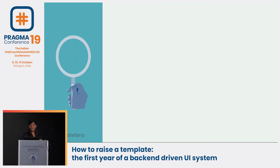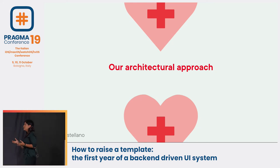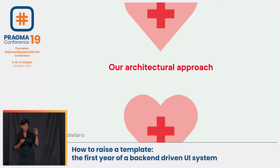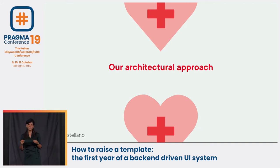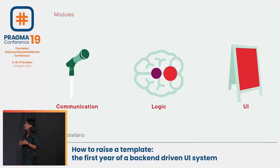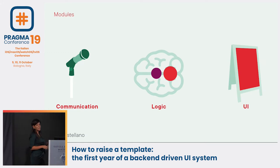We're done with our reasoning — let's move to our architectural approach. Our codebase is a bit old, and by old I mean it's intertwined — spaghetti code. We wanted something different, so we saw the value in having modules with clear ownership. We decided to modularize this project. We have three modules for our backend-driven development: the Communication module, the Logic module, and the UI module.